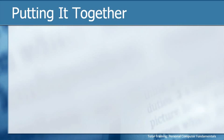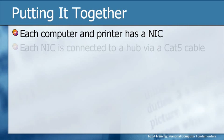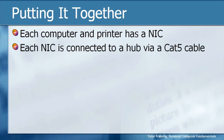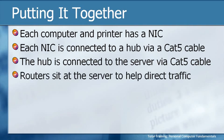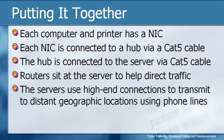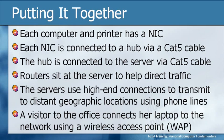So let's put it all together. Each computer, printer, and other device is going to have a network interface card, or NIC, if it's going to be on the network. Each NIC is connected to a hub, or something like that, via a Cat5 cable. The hub is then connected to the server via a Cat5 cable. Routers sit at the server to help direct traffic in larger environments — probably not in a home or small business. The servers then use high-end connections to transmit to distant geographic locations using phone lines or other technology like satellites and fiber optic cables. And a visitor to the office might connect her laptop to the network using a wireless access point.